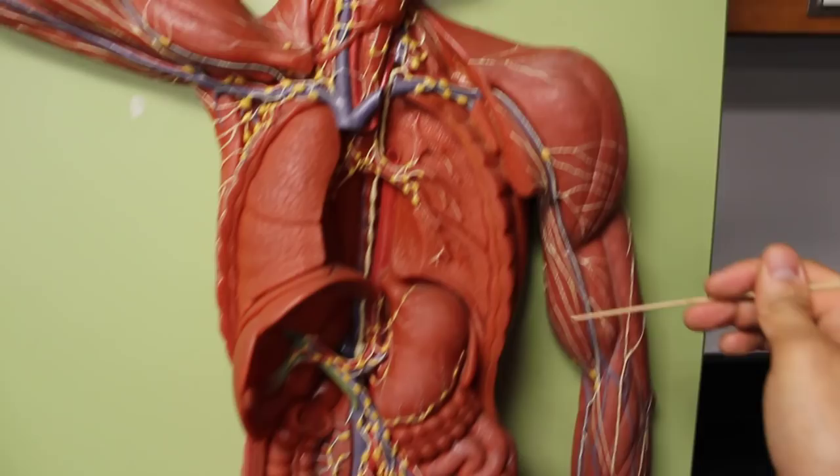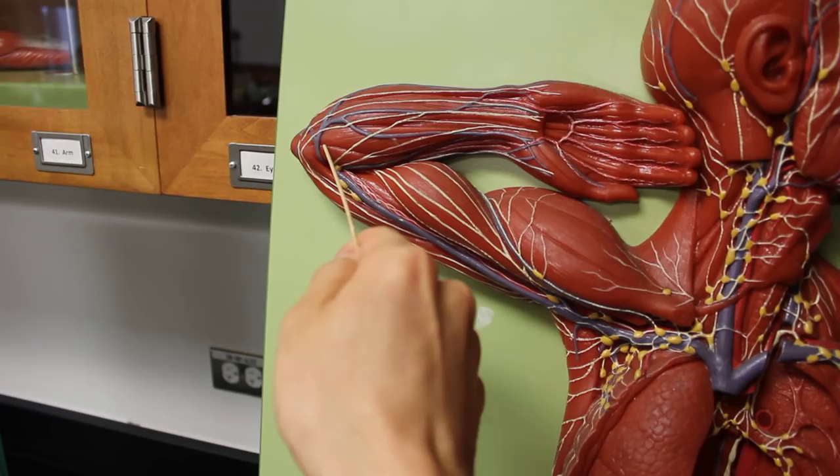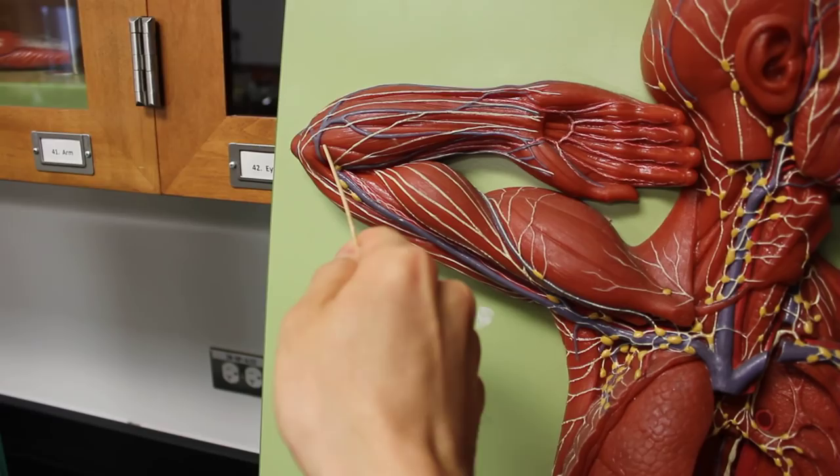This model also has some nice superficial veins here. You can see the cephalic vein coming down on the arm here, and then the basilic vein coming on the pinky side, draining to the brachial vein. And then of course the external jugular on this side, as well as some of the structures here, the great saphenous vein on the leg, and then a little bit of the hepatic portal system. Otherwise, this is mainly for the lymphatics.